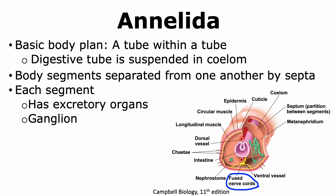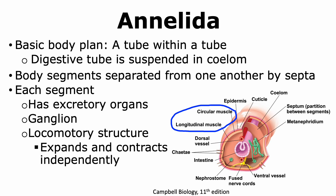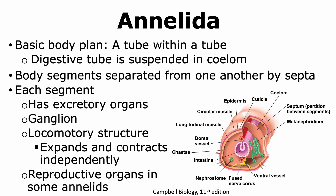Within each annelid segment there are excretory organs, ganglia (part of the nervous system), and locomotory structures including different types of muscles. Each muscle in a segment can expand and contract independently from another segment, allowing complex movement. Each segment may also have reproductive organs depending on the type of annelid. Having so many systems in each segment means that if certain segments are damaged, the annelid can still survive.